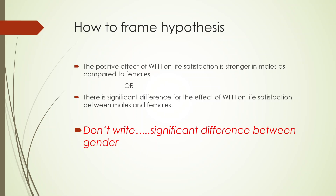Now how to frame the hypothesis for moderation analysis. What we write is: 'The positive effect of work from home on life satisfaction is stronger in males as compared to females,' or 'There is a significant difference for the effect of work from home on life satisfaction between males and females.' We never write that there is a significant difference between the gender.